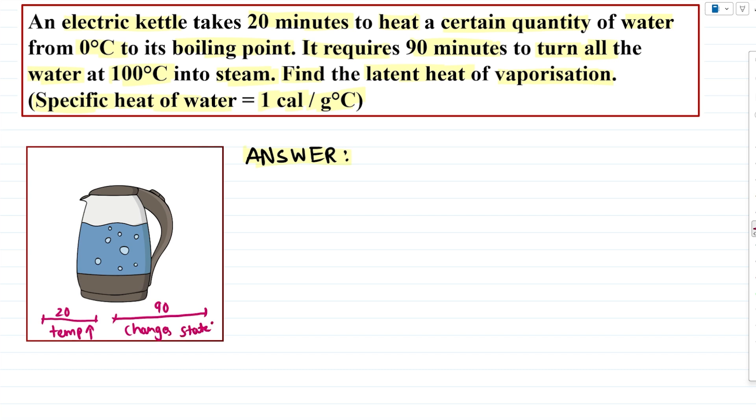So we have two types of scenarios: first, where temperature changes, and second, where state changes. Now, the first 20 minutes, let's call it Q1. Who will supply that heat? This heat will be supplied by our electric kettle.